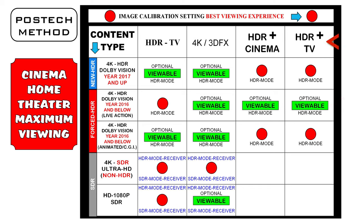The four image settings are: HDR TV, 4K or 3D FX, HDR plus cinema, and HDR plus TV. The five content types are: 1. 4K, HDR, Dolby Vision year 2017 and up, called New HDR. 2. 4K, HDR, Dolby Vision year 2016 and below for live action, called Forced HDR. 3. 4K, HDR, Dolby Vision year 2016 and below for animated and 100% CGI, called Forced HDR. 4. 4K SDR Ultra HD that is non-HDR. 5. HD 1080p SDR.